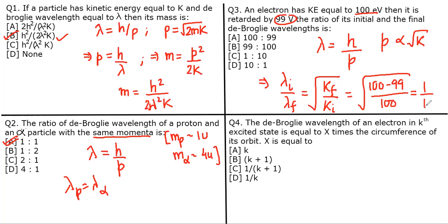So the answer is option C (1:10). Now let's solve a beautiful question: The de Broglie wavelength of an electron in the kth excited state is equal to X times the circumference of its orbit. X equals...